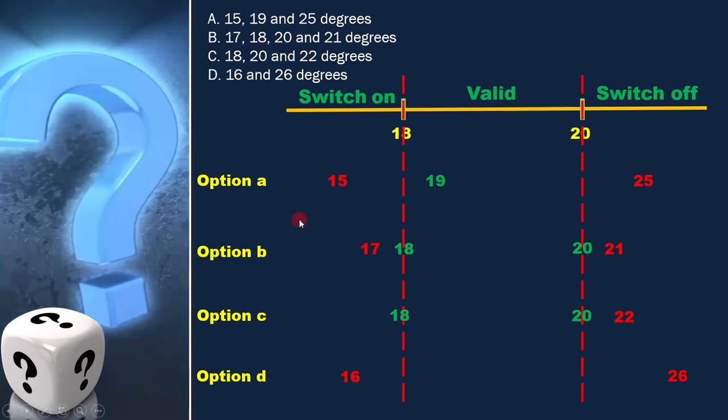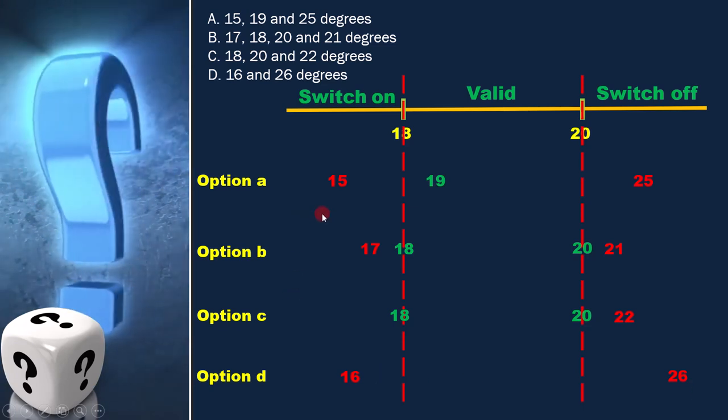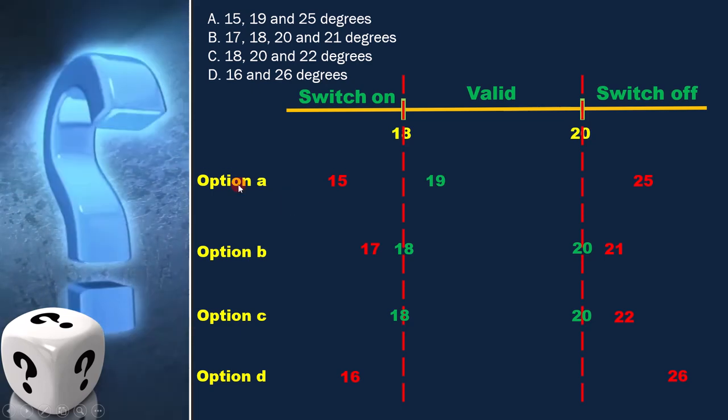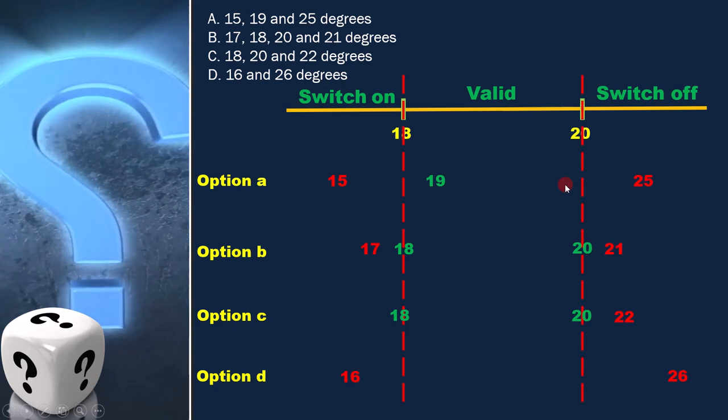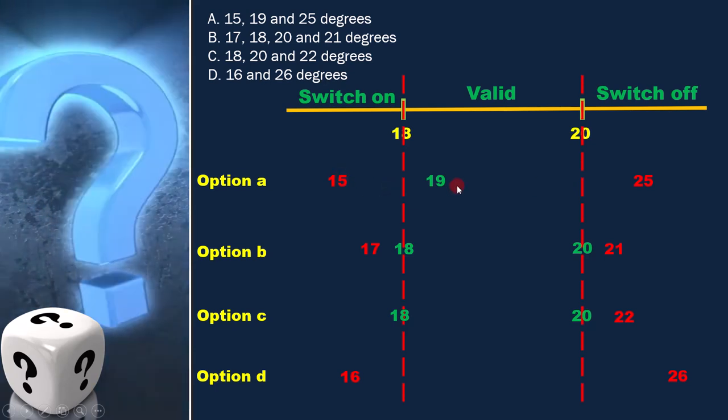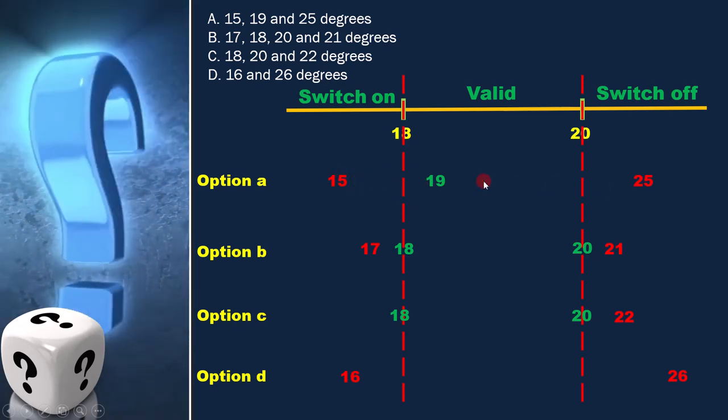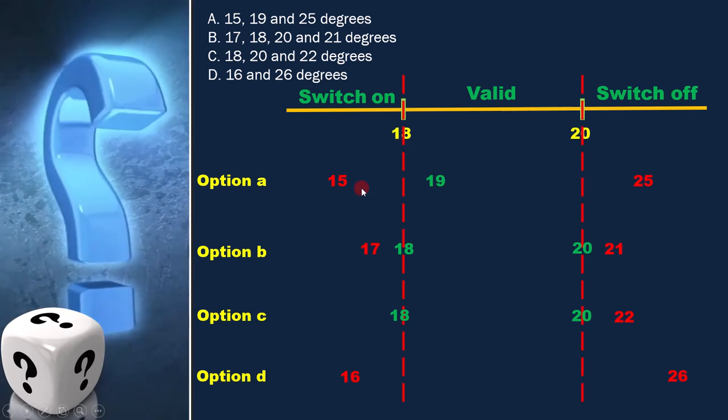Since we have to cover values from all valid equivalence partitions, option A is the answer. Because here all the three values are in three different classes and only with three values, we can achieve it.